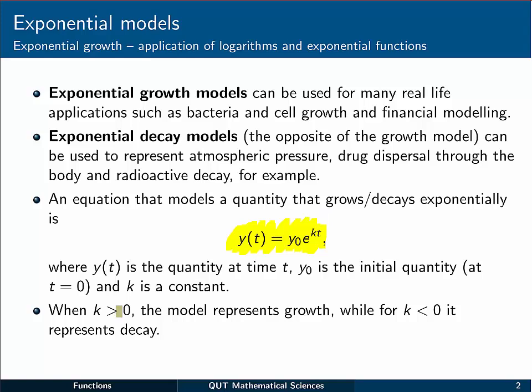When k is greater than zero, or positive, the model represents growth, while if k is less than zero, a negative value, it represents decay.